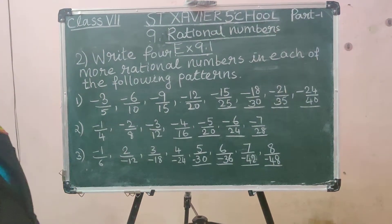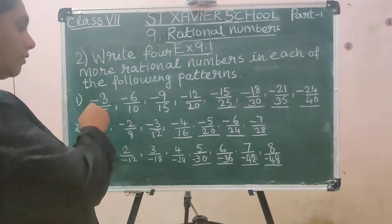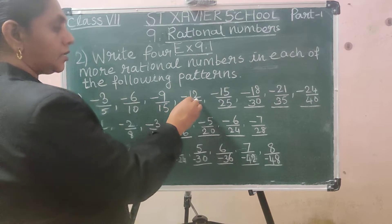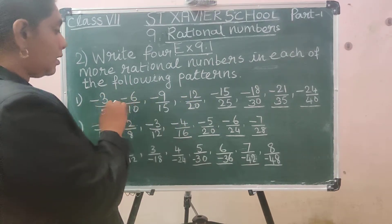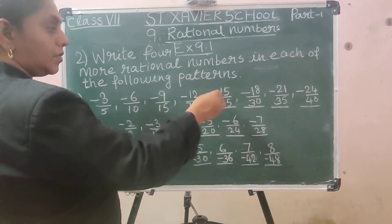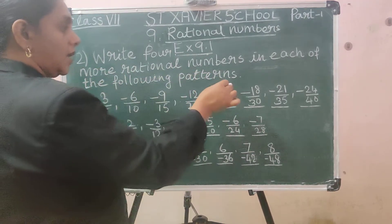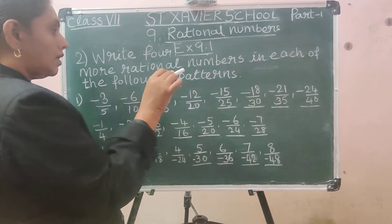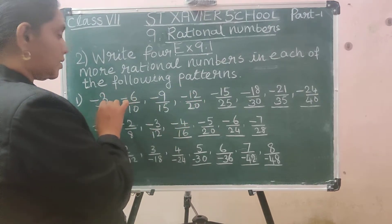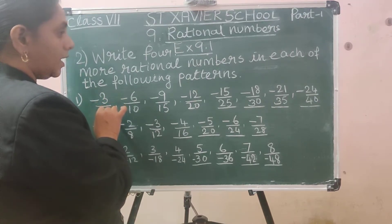Question 2: Write 4 more rational numbers in each of the following patterns. The first pattern is minus 3 by 5, minus 6 by 10, minus 9 by 15, minus 12 by 20. The numerators are multiples of 3 and the denominators are multiples of 5. So the next four are: minus 15 by 25, minus 18 by 30, minus 21 by 35, and minus 24 by 40.